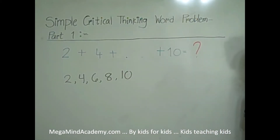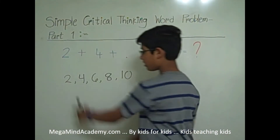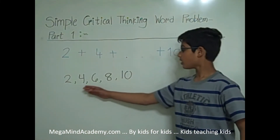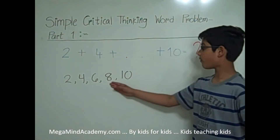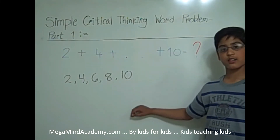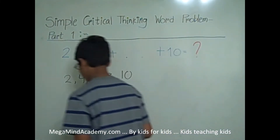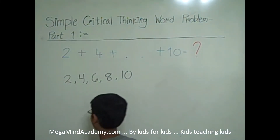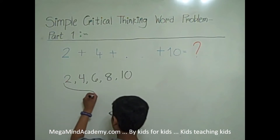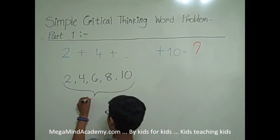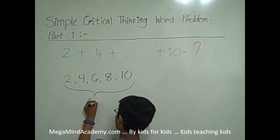Now let's count how many numbers we have. We have 1, 2, 3, 4, and 5 numbers. Let's write that down. We have 5 numbers.